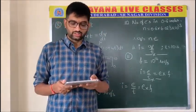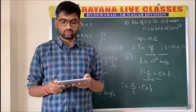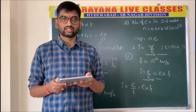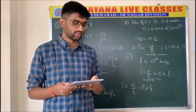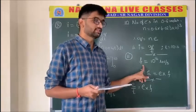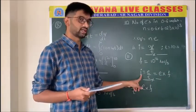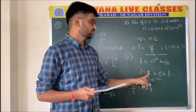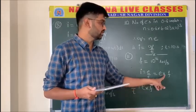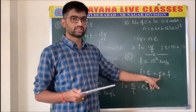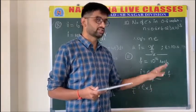Question number eleven: an electron carrying a charge of 1.6×10⁻¹⁹ coulombs revolves in a circle at 10¹⁶ revolutions per second. Find the corresponding current. Current I = e/t = e×f, where frequency f = 10¹⁶. So I = 1.6×10⁻¹⁹ × 10¹⁶.